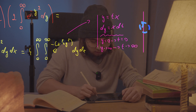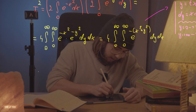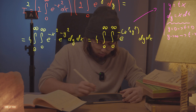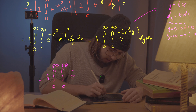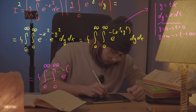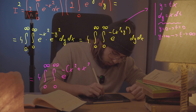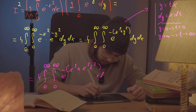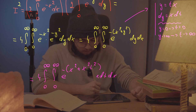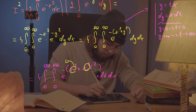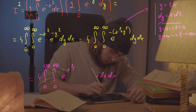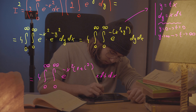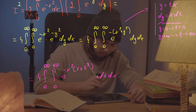Applying this change of variables into our double integral, we get four multiplied by the double integral from zero to infinity and zero to infinity of e to the negative (x squared plus x squared t squared) times x dt dx. Factoring x squared out of the exponent gives e to the negative x squared times (1 plus t squared), times x dt dx.